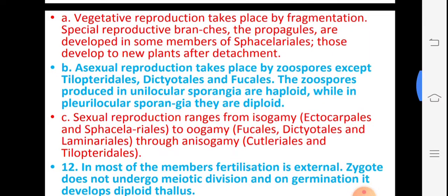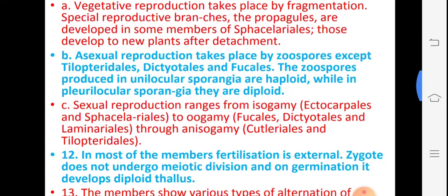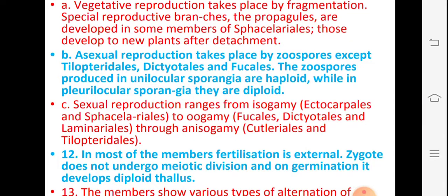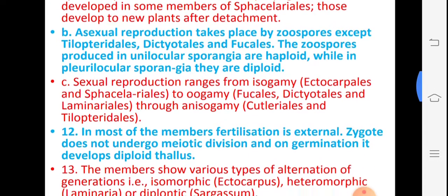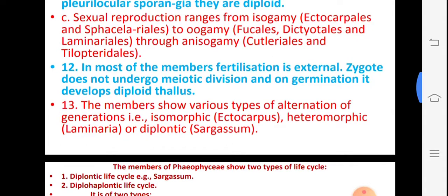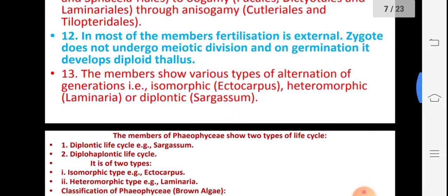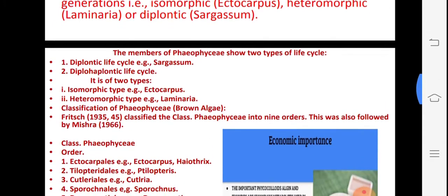In reproduction, there are vegetative, asexual, and sexual modes. Vegetatively they reproduce by fragmentation; special reproductive branches called propagules develop new plants. Asexually, zoospores develop in unilocular sporangia and plurilocular sporangia, as observed in Ectocarpus. Sexual reproduction is isogamous in Ectocarpales, and oogamous in Fucus, Dictyota, and Laminaria.